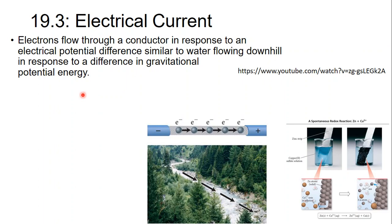In this video we're going to look at electrical current, and you can think of electrical current just like water flowing. Negative electrons are going to the positive part of the cell.